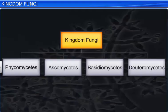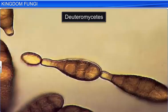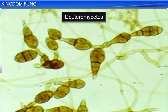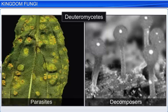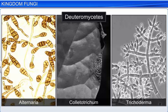The last class of fungi, Deuteromycetes, is known as imperfect fungi, because we do not know enough about their life cycles. Only their asexual or vegetative phases are known. Deuteromycetes reproduce only through asexual spores known as conidia. They too have a septate and branched mycelium. They are saprophytes or parasites, while a large number of them are decomposers, which help in mineral cycling. Alternaria, Colletotrichum, and Trichoderma are examples of Deuteromycetes. Therefore, members of Kingdom Fungi display a diverse set of characteristics.